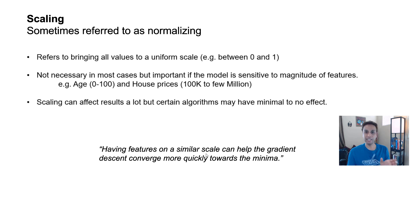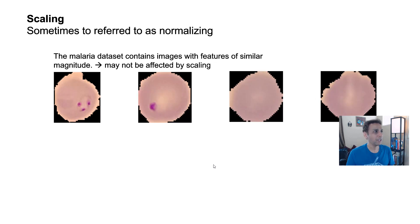It says having features on similar scale can help the gradient descent because you are basically relying on the optimization process. If you have all the inputs scaled, then the gradient descent converges more quickly towards the minima. So quicker answer, not as much computation time.